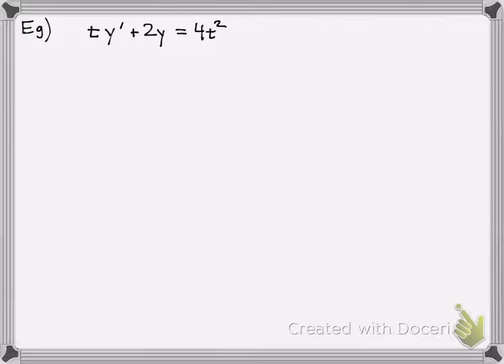So let's do an example now. So we're given this equation, ty prime plus 2y equals 4t squared.